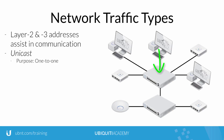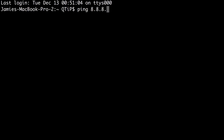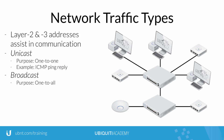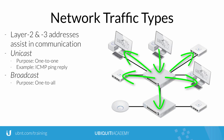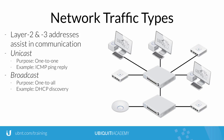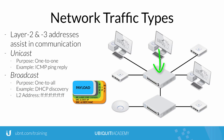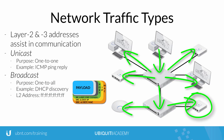Unicast traffic involves one-to-one communication. For example, an ICMP ping reply is unicast traffic. Broadcast traffic is one-to-all communication, where all hosts on the Layer 2 or Layer 3 network are the intended recipients. For example, a host needing a DHCP address would use the Layer 2 broadcast address FF:FF:FF:FF:FF:FF in order to discover a DHCP server on the local network.